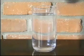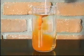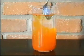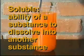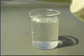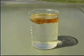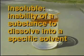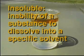When a substance like these flavored drink crystals dissolves into another substance like water, it is said to be soluble. When a substance is soluble, it can dissolve into a solvent. When one substance, like oil, cannot dissolve into another substance like water, it is said to be insoluble. When a substance is insoluble, it cannot dissolve into a specific solvent.